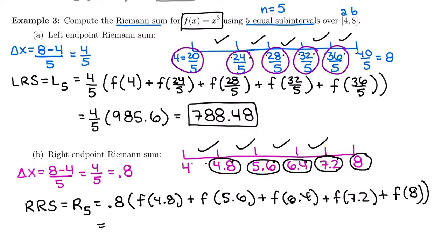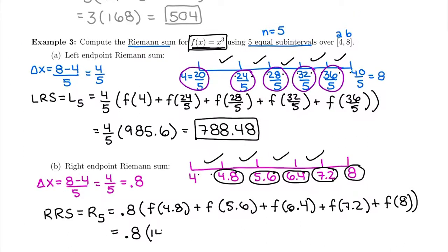So now I'm taking these, I'm plugging into the original function, x³. So I'm going to do 0.8 and do 4.8³ plus 5.6³ plus 6.4³ plus 7.2³ plus 8³ and see what I get for my y value. So all of my y values added up, I'm going to do times my y values added to be 1433.6. And so lastly, I need to do my width times that height, which is going to give me 1146.88.